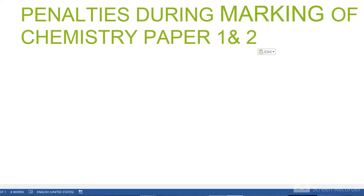Welcome. Today I want to take you through the penalties during marking of chemistry paper 1 and paper 2. Students read a lot and have content, but there are some small mistakes which students make. When they get their results at the end of the year in form 4, they find that the grade they score in chemistry is not what they expected. These are some of the penalties or mistakes students do.